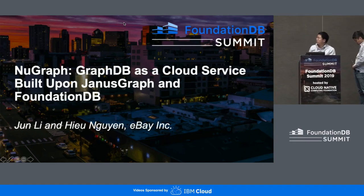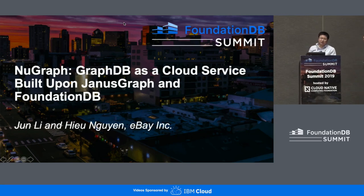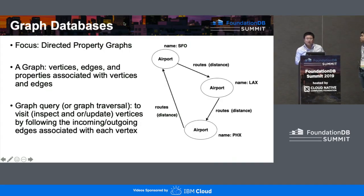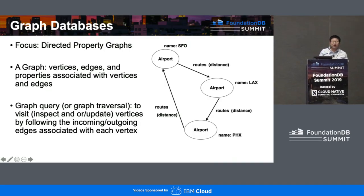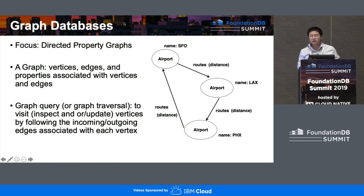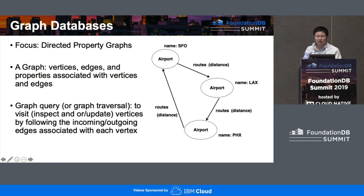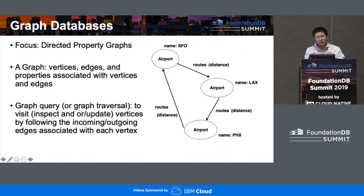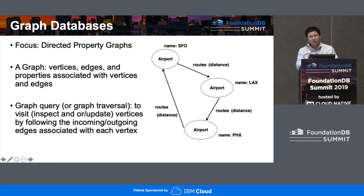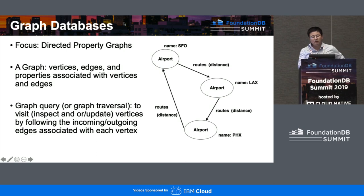Today we'd like to present to you NewGraph, which is a GraphDB service built upon JanusGraph and FoundationDB. A graph consists of vertices and edges. In the diagram on the right-hand side, you can see the airport is the vertex, the route connected between airports is the edge, and you have properties like distance attached to the edge and name attached to the vertex.